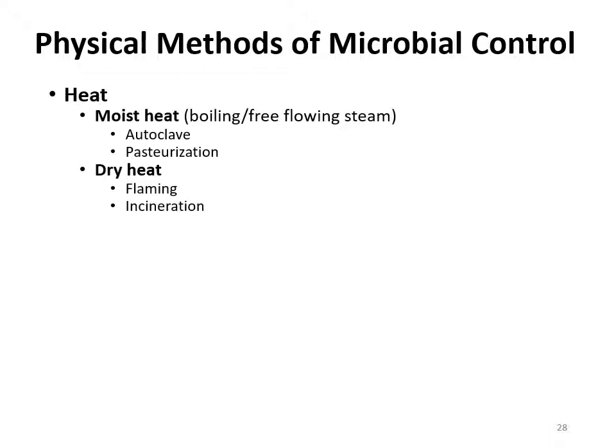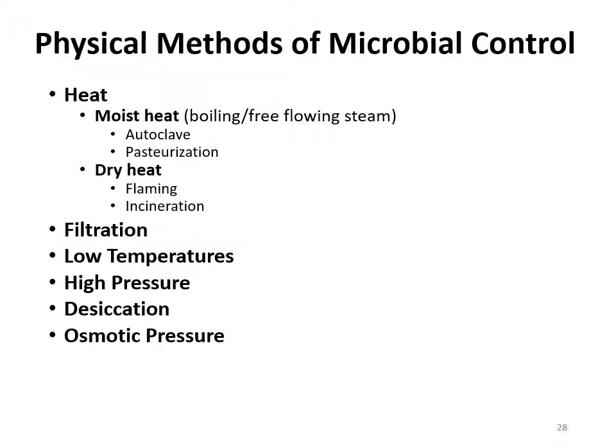The last thing to mention is some physical methods to control microbial growth. Physical methods include heat, filtration, temperature, high pressure, desiccation, osmotic pressure, and radiation. When we talk about heat, there are two forms: moist heat and dry heat. In the lab, we use incinerators on your desks and Bunsen burners — that is dry heat, and those sterilize. We also use the autoclave, which sterilizes by using high pressure, water, and steam at very high temperature.